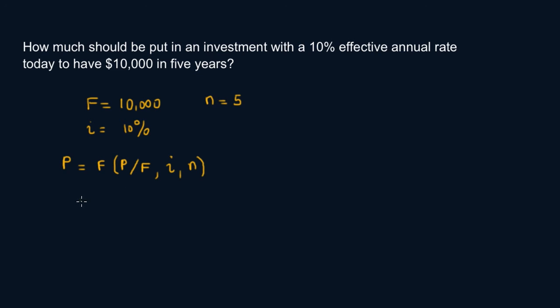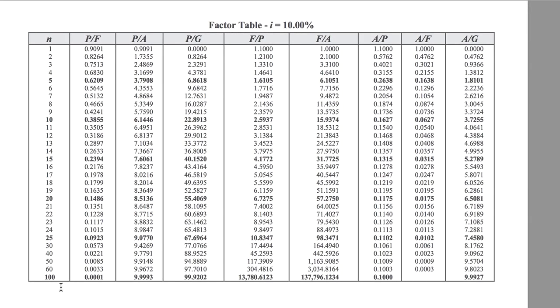All right. So we know F, which is 10,000. All right. So let's go to the table. And then just fill it up with the correct value.